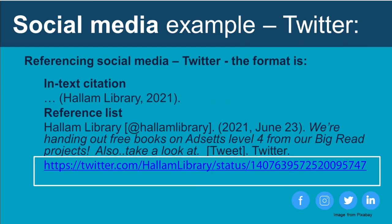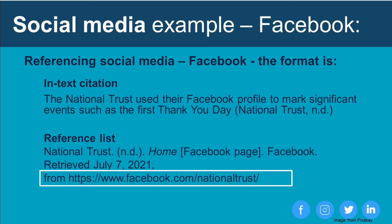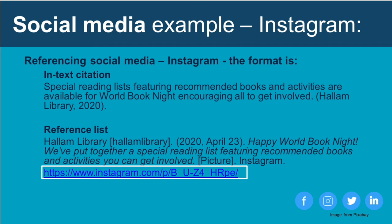Let's look at some social media examples. For a Twitter post from the Hallam Library Twitter account, the title contains the first 20 words in italics, identified as a tweet in square brackets, with a full URL and the name of the platform — Twitter. For a Facebook page with no date, the approach is very similar to referencing Twitter profiles. For an Instagram post from Hallam Library, use square brackets to include specific information about the content, for example '[picture],' and add the date if available.